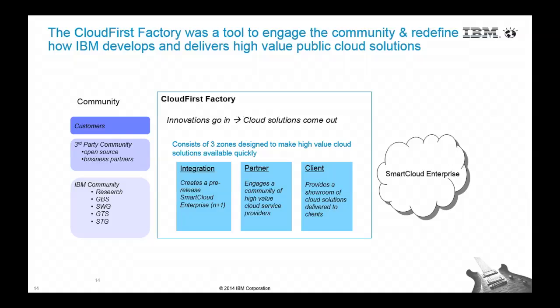Our community consisted of customers, third-party community, open source, and business partners. The IBM internal community included research, GBS, GTS, and software group. We were looking for them to start playing with our stuff. Here are the three zones: integration, partner, and client. We were literally moving from left to right — innovations go in and cloud solutions come out. That was the whole purpose of the Cloud First Factory.